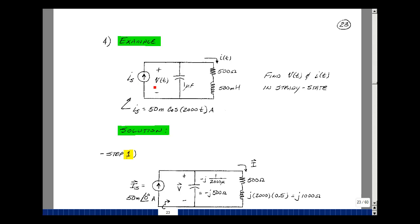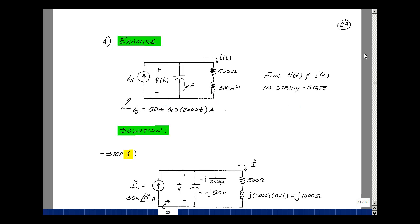Consider this example with a current source, a capacitor, and then a series resistor and inductor. Let's find the voltage across the parallel combination and the current through the R and L in steady state. We'll again use our three-step algorithm.